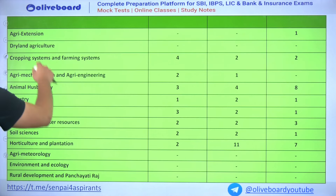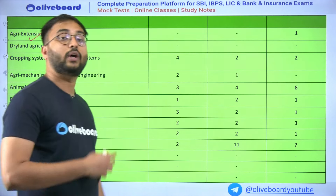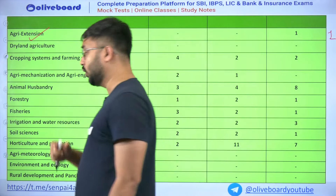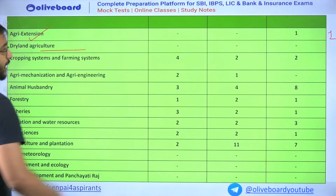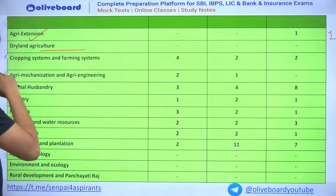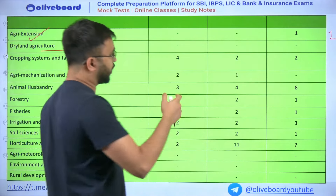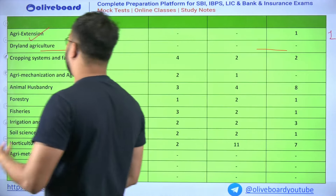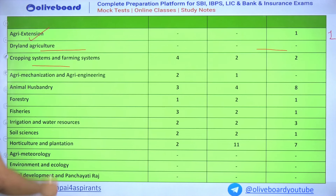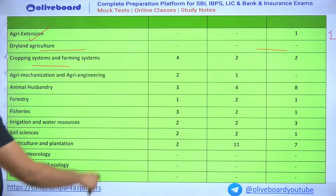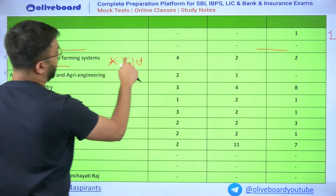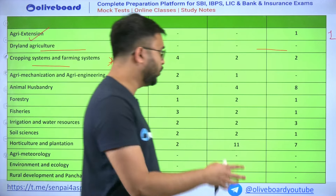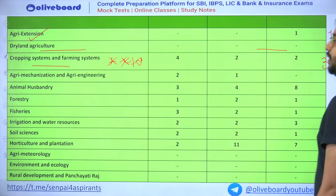Agri Extension is related to Extension Education; in 2023 there was one question, and in 2022 also one question — related to demonstrations. Dry land agriculture has had no questions so far, but definitions of dry land agriculture or rainforest farming could be asked. Cropping systems, cropping patterns, and farming systems is another three-star chapter — always 3 to 4 questions. In 2023, there were 3 questions from this chapter.